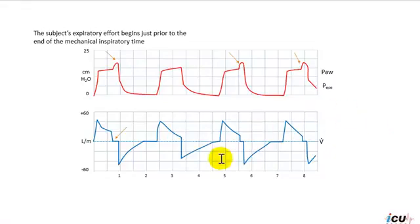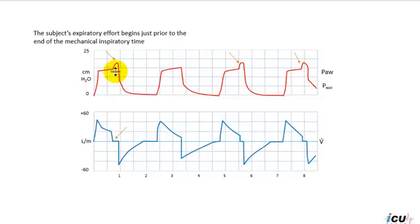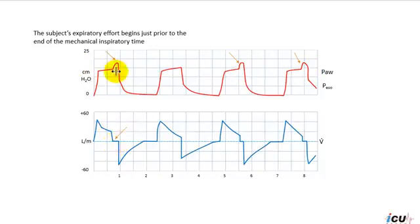Another example of early termination is on pressure regulated volume control mode of ventilation. Similar to the previous case, the subject's expiratory muscle efforts begin just prior to the end of the mechanical inspiratory time. That's why you see a rise in pressure at the end of inspiration. And because of the expiratory effort, the flow goes down to zero — you can appreciate zero flow in this breath, in this breath, and in this breath too.